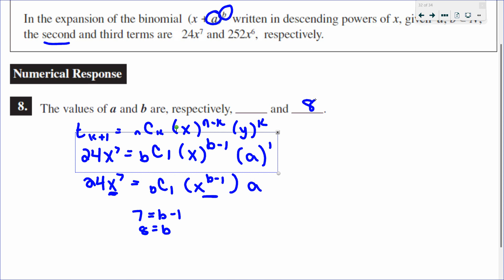Now that I know b is 8, let's go to my third term. Using my general term formula, third term means that k must be 2. My third term is 252x^6, n which is b value, we now know is 8. For the third term, k is 2.